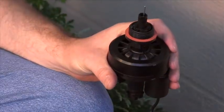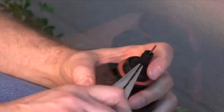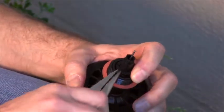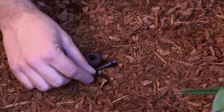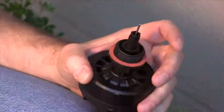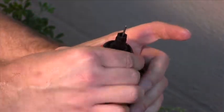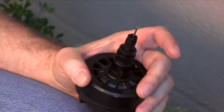Now you can get at the retainer clip, which is removed by pulling up on one side with the needle nose pliers. Set this aside with the seat screw. Now you can remove the three-quarter inch adapter by pulling it straight off the actuator post.